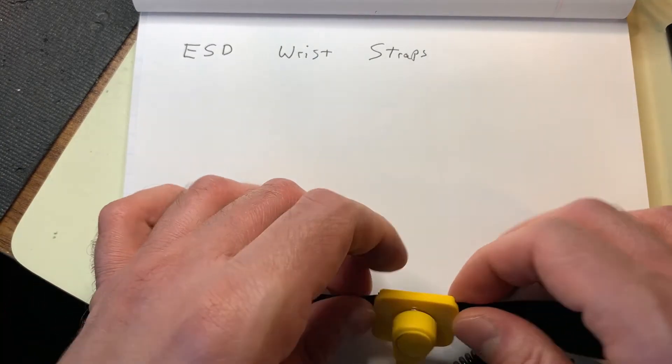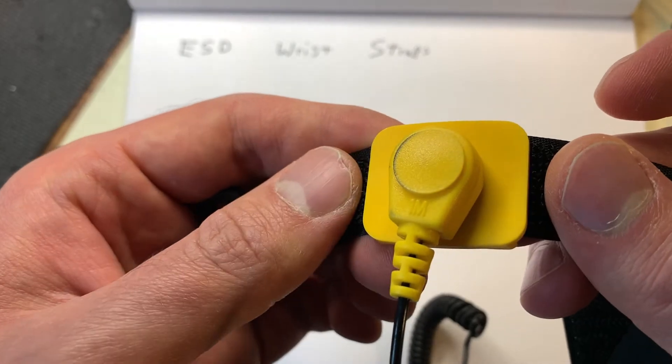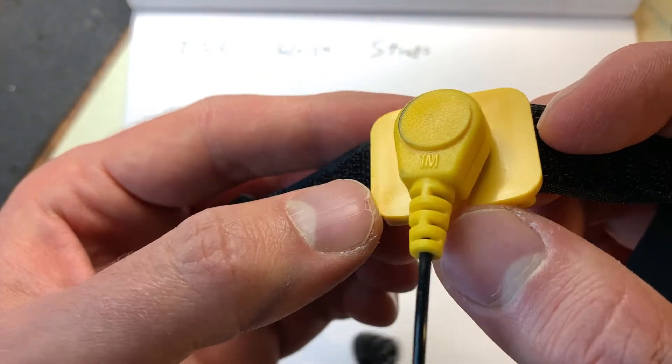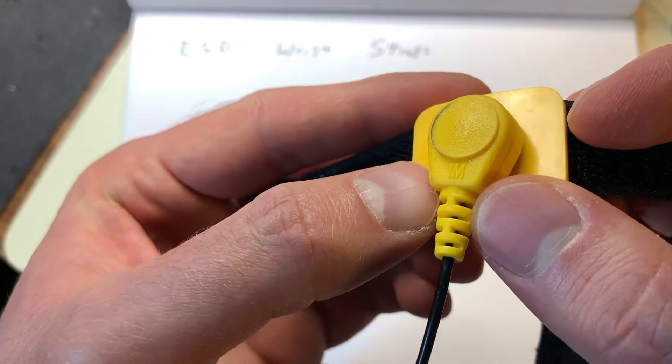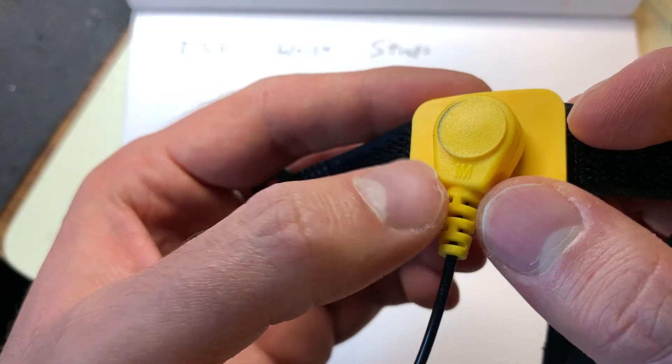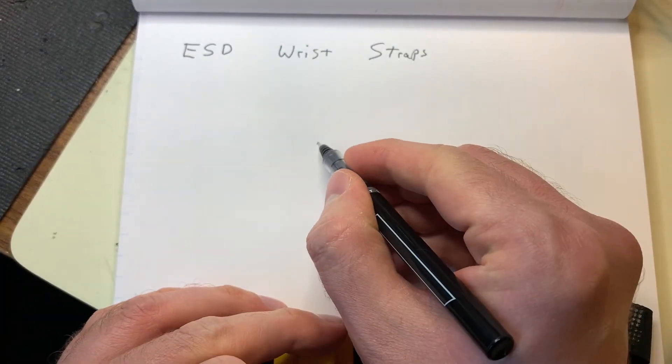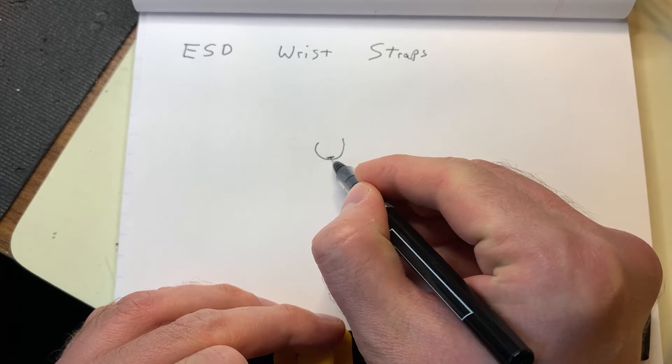Now a proper wrist strap will have a built-in resistor on the inside of it. You can see here that this wrist strap has a 1M symbol behind it, and what that means is that this wrist strap looks kind of like this on paper.